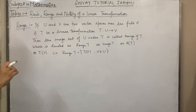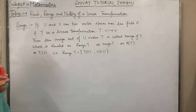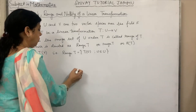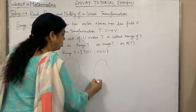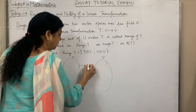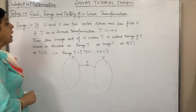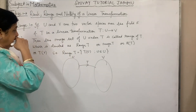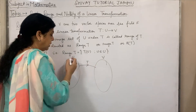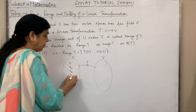Firstly, we will discuss about range. If U and V are two vector spaces over the field F — one is U and one is V — and T is the transformation which shifts the elements of U to V. The set of U under T has elements X1, X2, X3, X4.